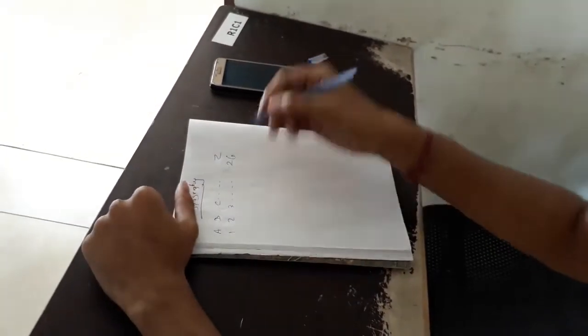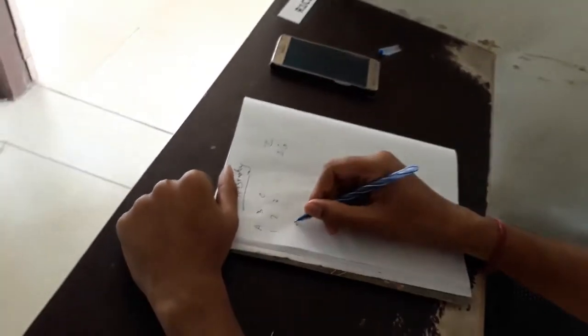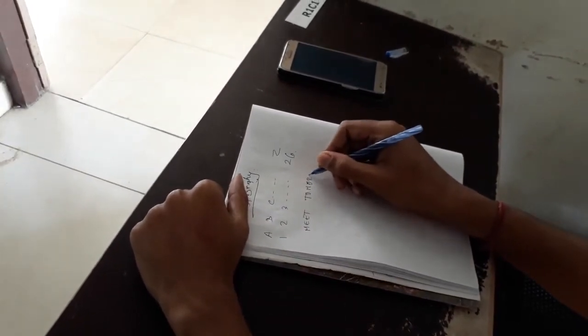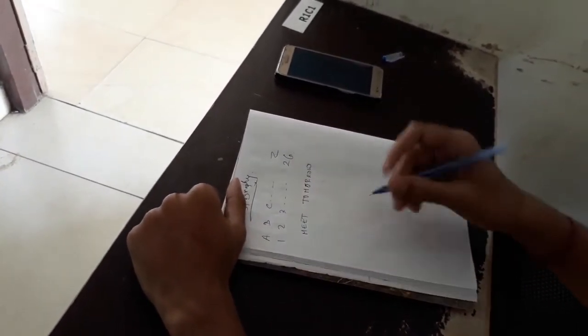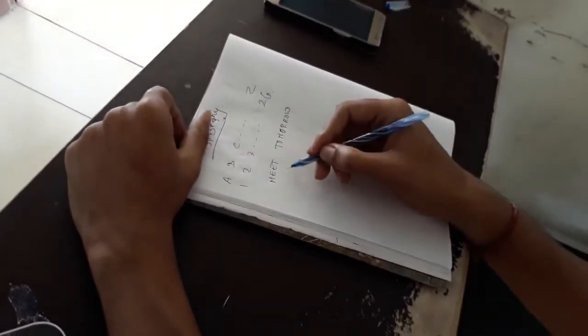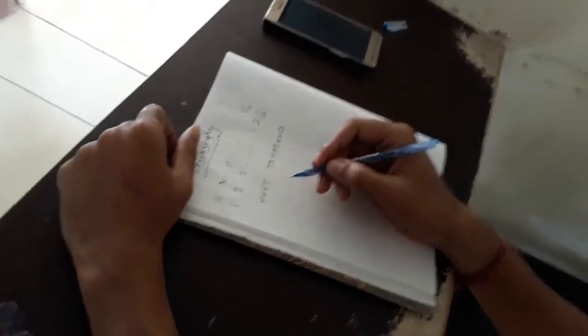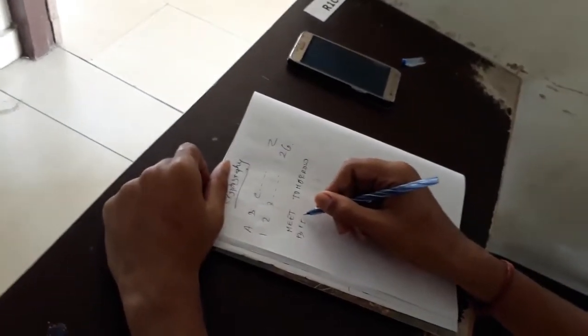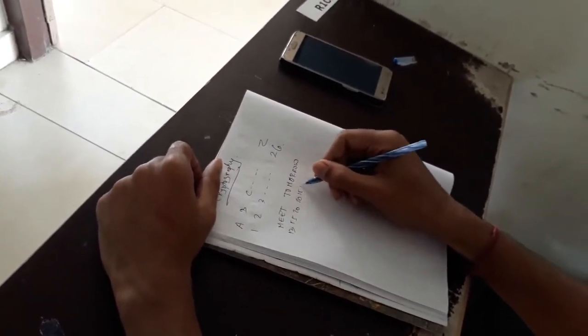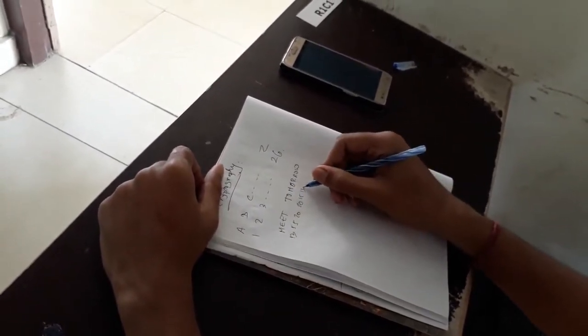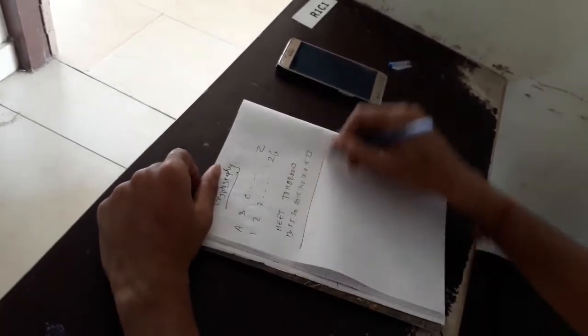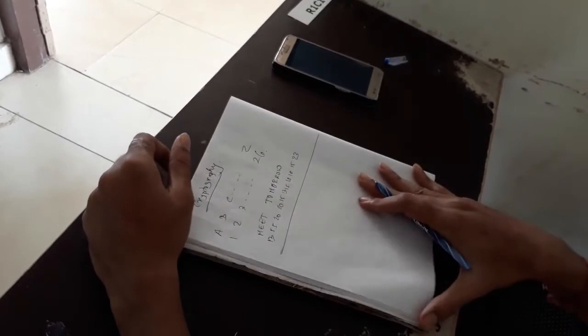Suppose I have sent a message to my friend: Meet tomorrow. First task is to convert these letters into the numbers, and those are as 13, 5, 5, 20, 20, 15, 13, 15, 18, 18, 15, 23. These are the numbers for meet tomorrow.